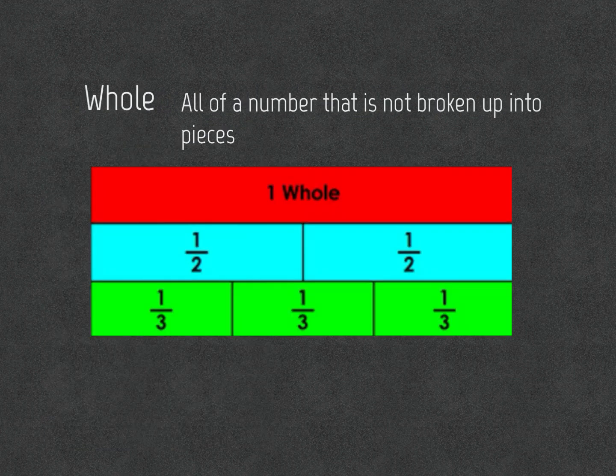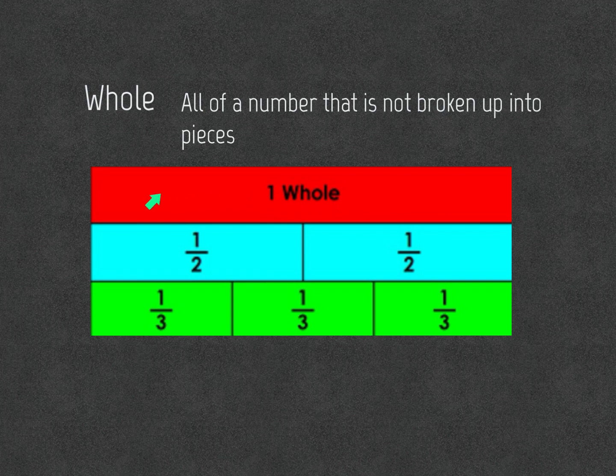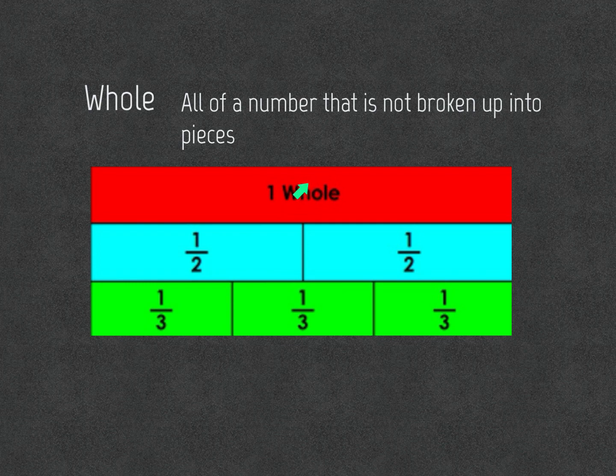A whole is all of a number that is not broken up into pieces. So, this bar right here or strip is one whole because it has not yet been divided into multiple strips.